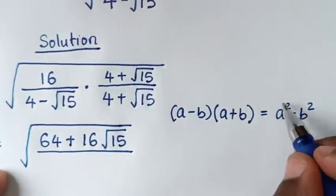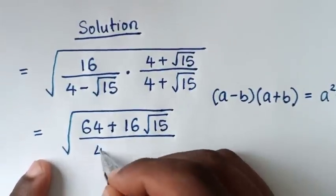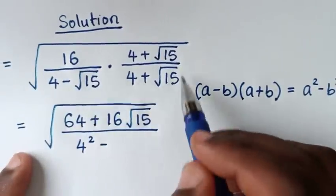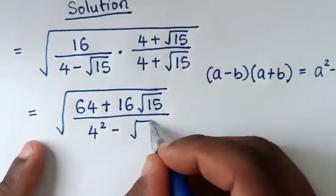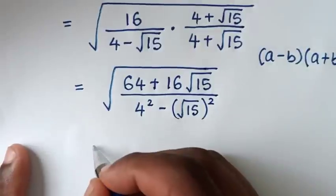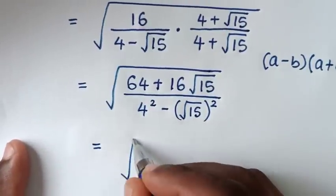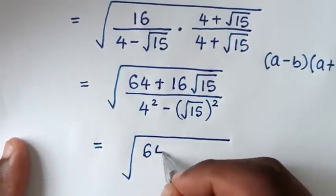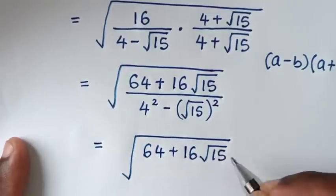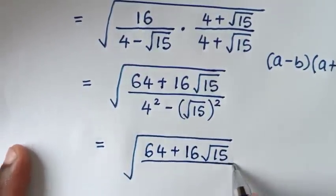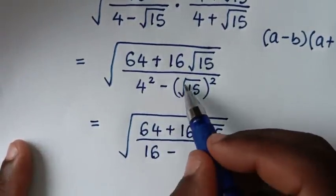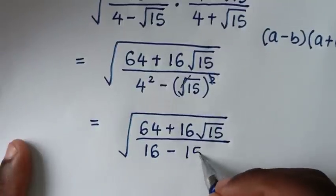So we'll apply this form here. a squared will be 4 squared, so here 4 squared, minus b squared will be square root of 15, bracket squared. Then it will be equal to square root of 64 plus 16 square root of 15, then over: 4 squared is 16, minus — and the square root will cancel the square, so it will be minus 15.